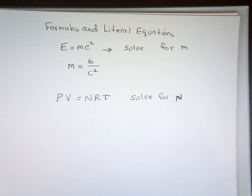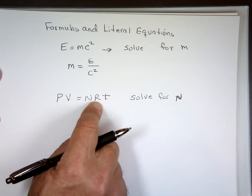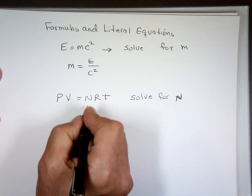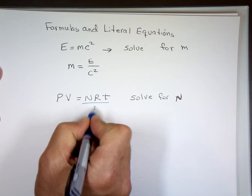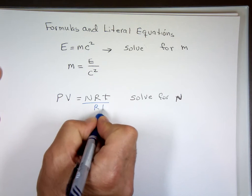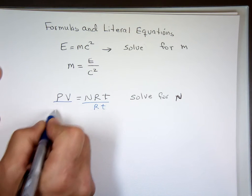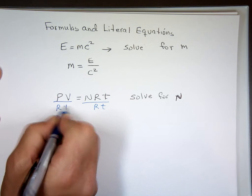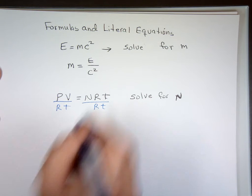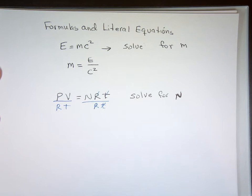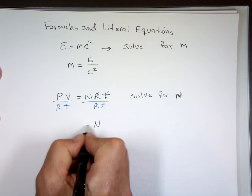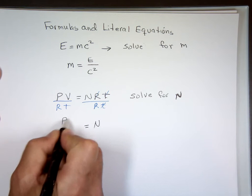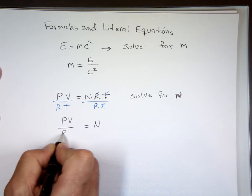What do you see there? Multiplications. So to get rid of R and T on this side, I have to divide this side by R and T. And if I divide this side by R and T, I have to divide the other side by R and T as well. So N, the number of molecules, equals P times V divided by R times T.